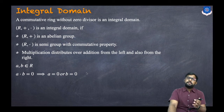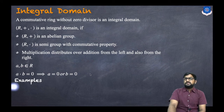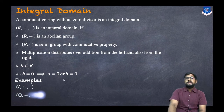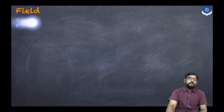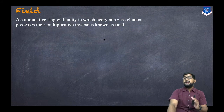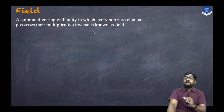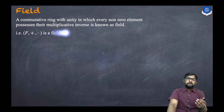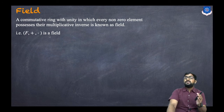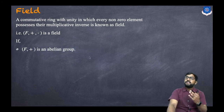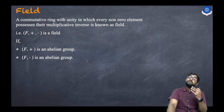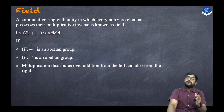Examples of integral domains: (Z, +, ·) is an integral domain, and (Q, +, ·) is an integral domain. Now let us discuss what is a field. A commutative ring with unity in which every non-zero element possesses a multiplicative inverse is known as a field. (F, +, ·) is a field if (F, +) is an abelian group and (F, ·) is also an abelian group.